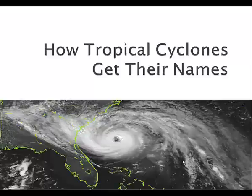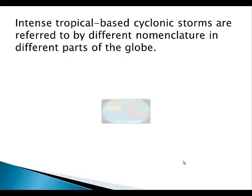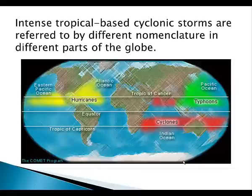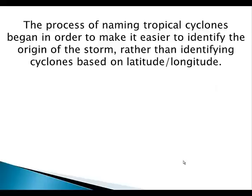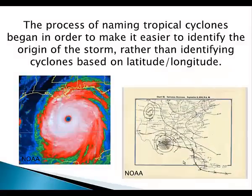The first thing we need to do is explain how tropical cyclones get their names. Intense tropically based cyclonic storms are referred to by different nomenclature in different parts of the globe. In the western Pacific, these types of storms are called typhoons. In the Indian Ocean as well as the South Pacific, they're called cyclones, and closer to home in the Atlantic and the eastern and central Pacific oceans, they're called hurricanes. The process of naming tropical cyclones began in order to make it easier to identify the origin of the storm rather than trying to identify a storm strictly based on its latitude and longitude.